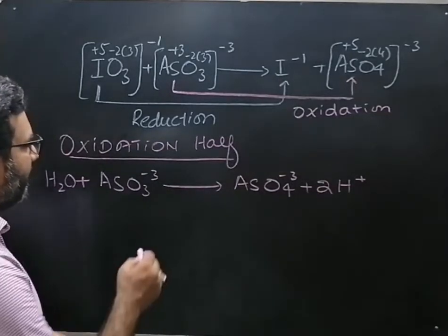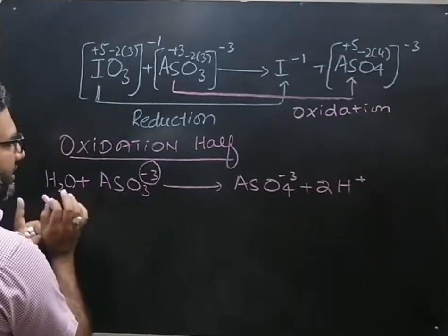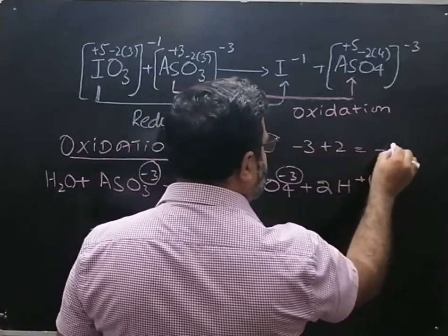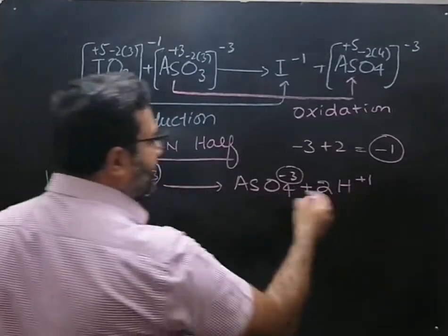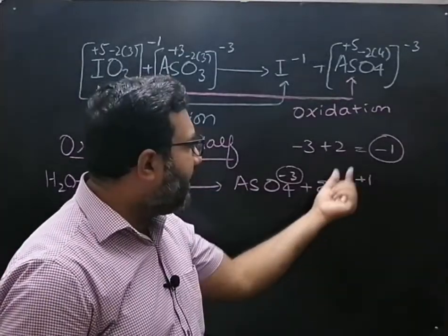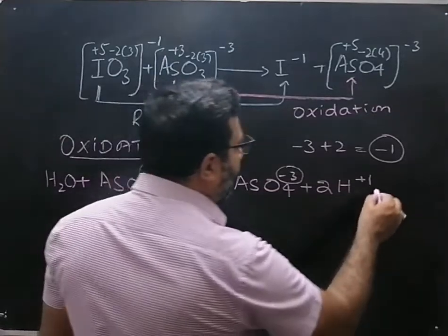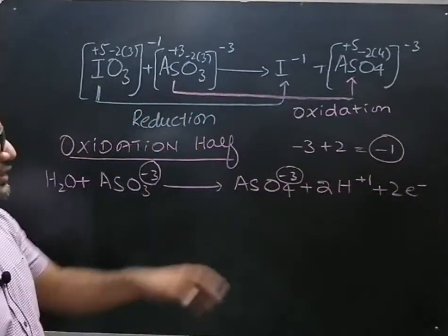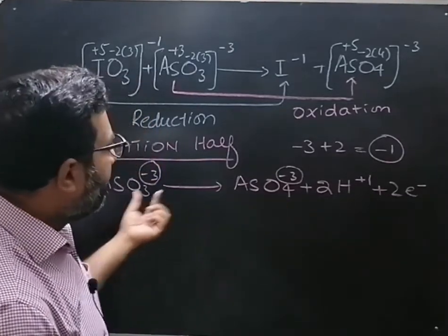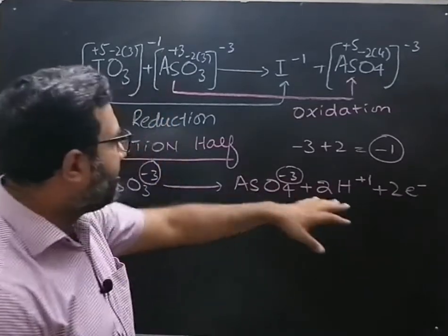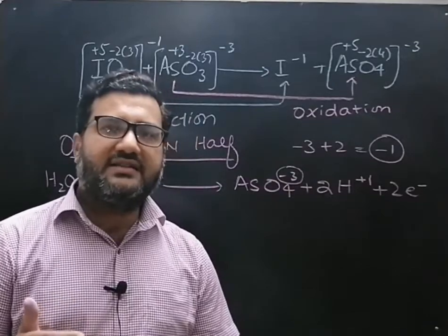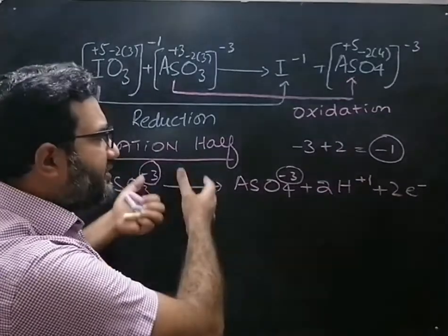Now balance the charge. On the left side, the total charge is −3 (water is neutral). On the right side, the charge is −3 plus 2H⁺ giving +2, so the overall charge is −1. The left side is −3 and the right side is −1. To make the right side equal to −3, add two electrons to the right side. After adding two electrons, both sides now carry −3. The atoms and charges on both sides of the oxidation half are balanced.